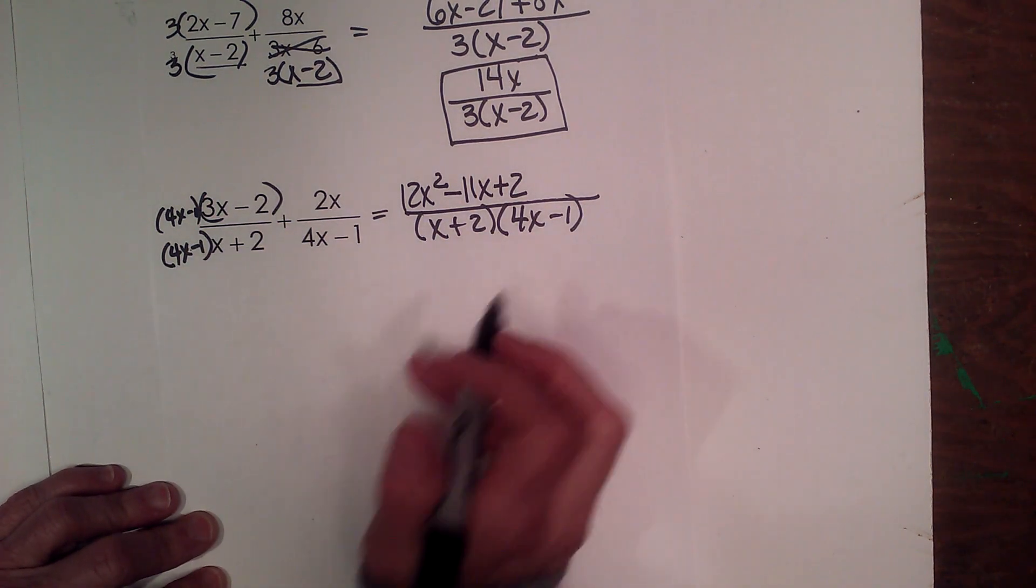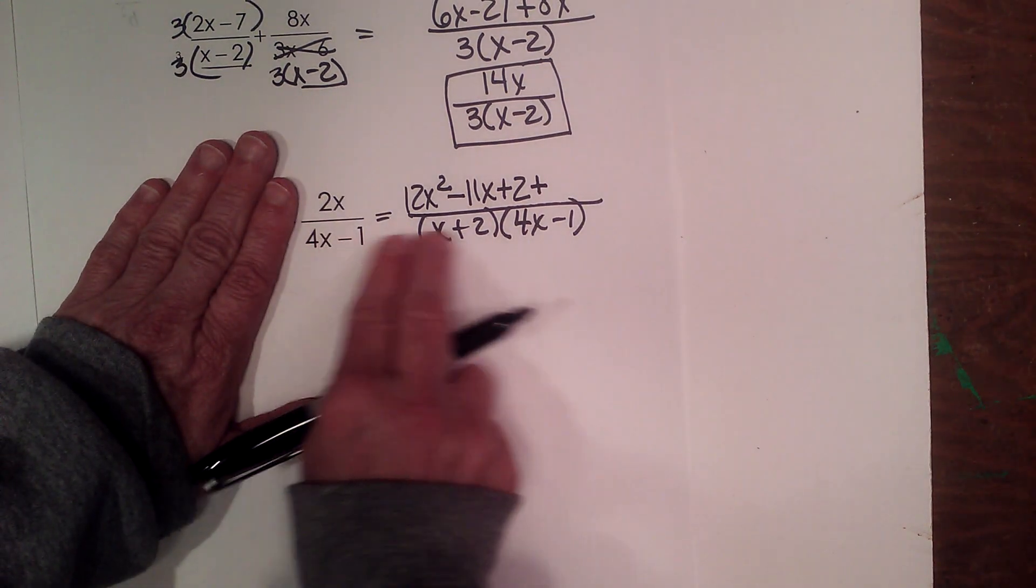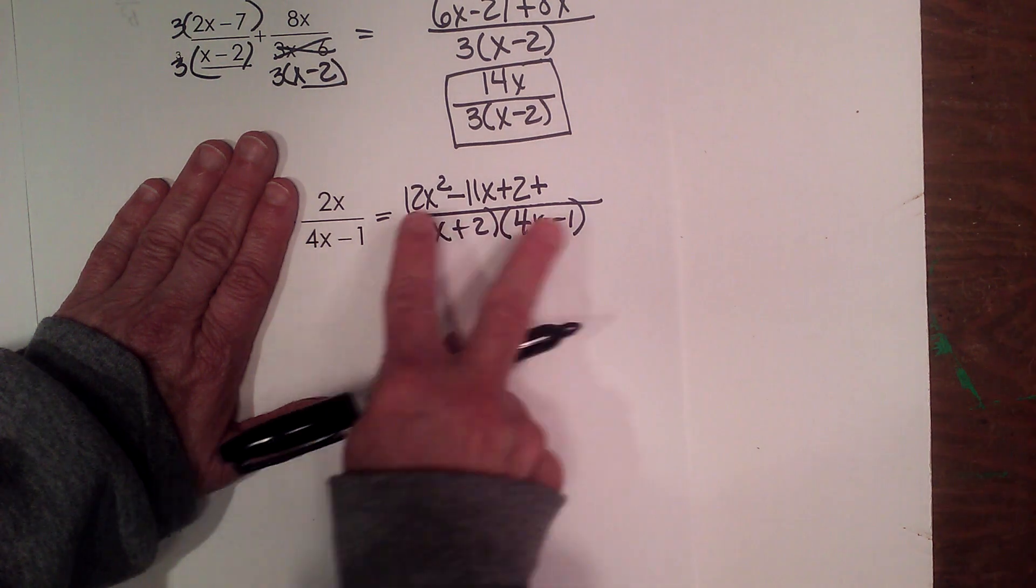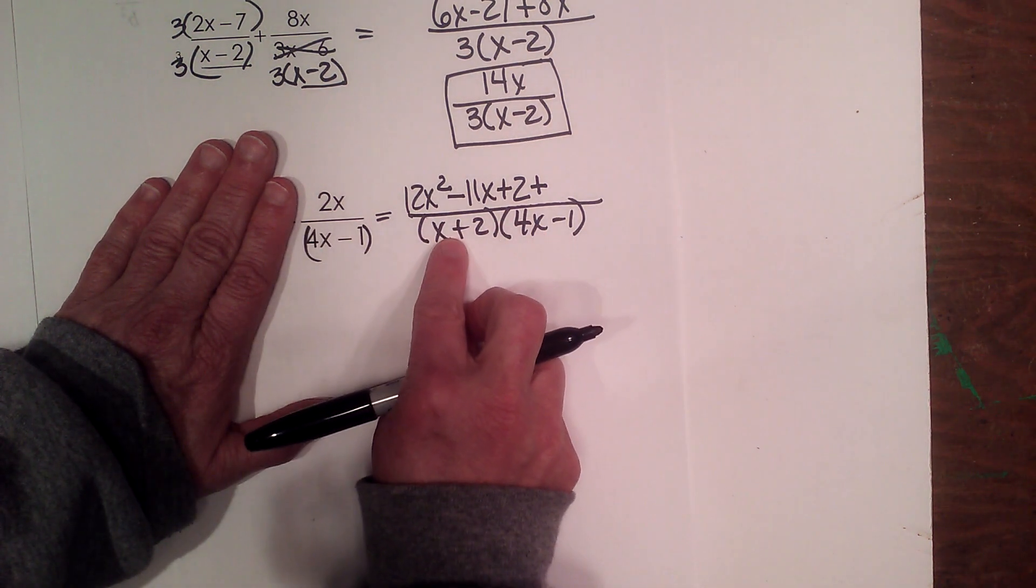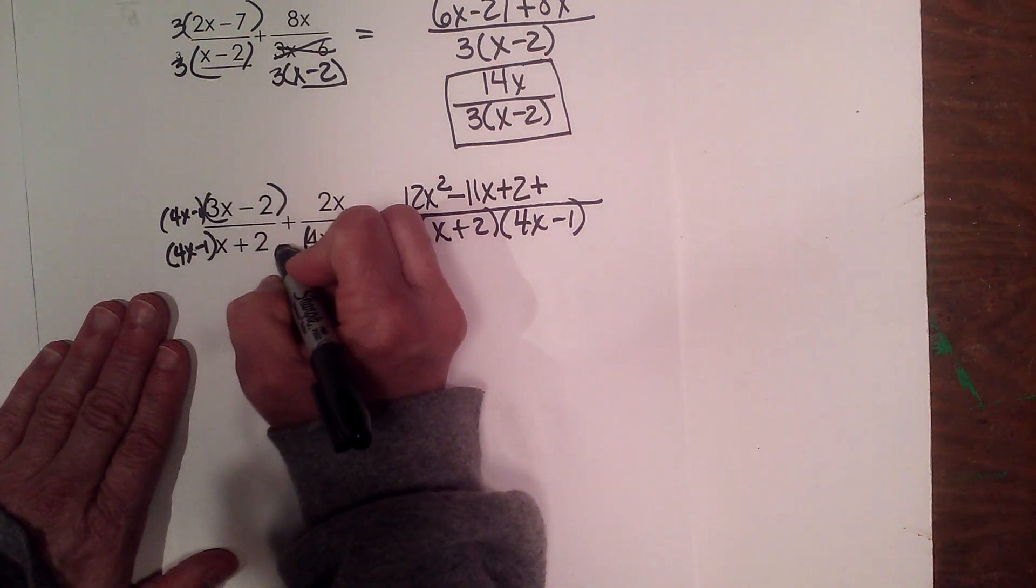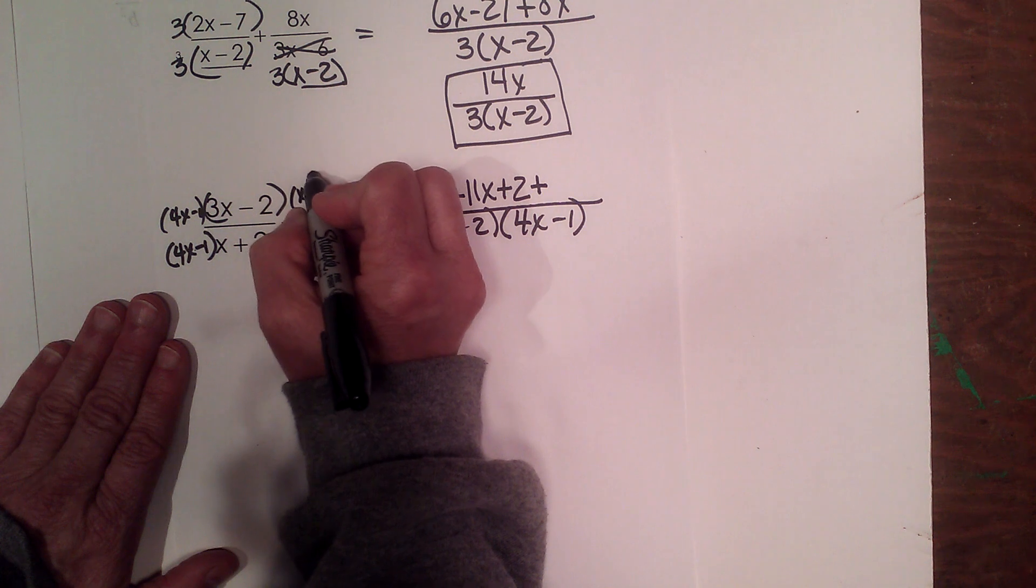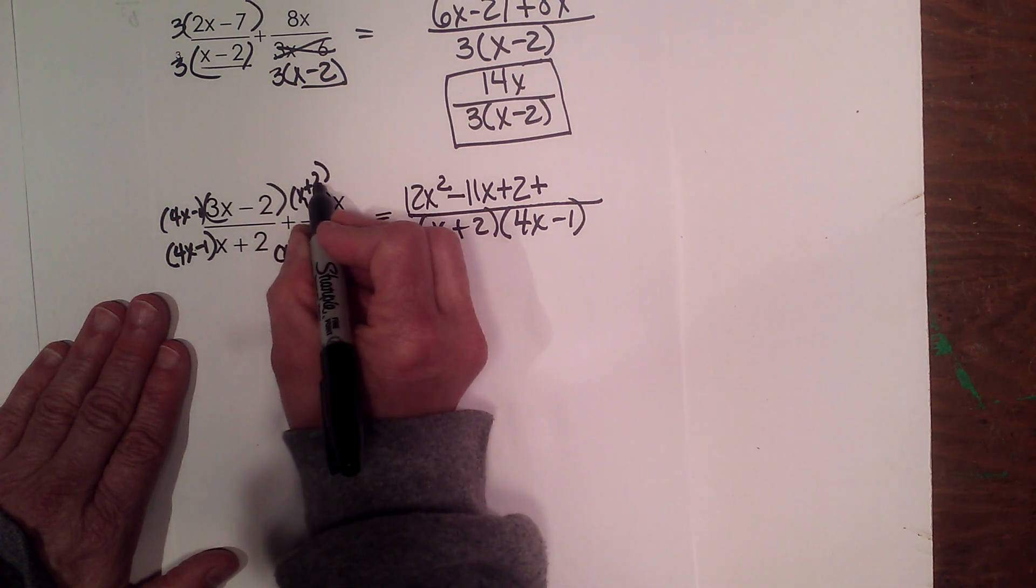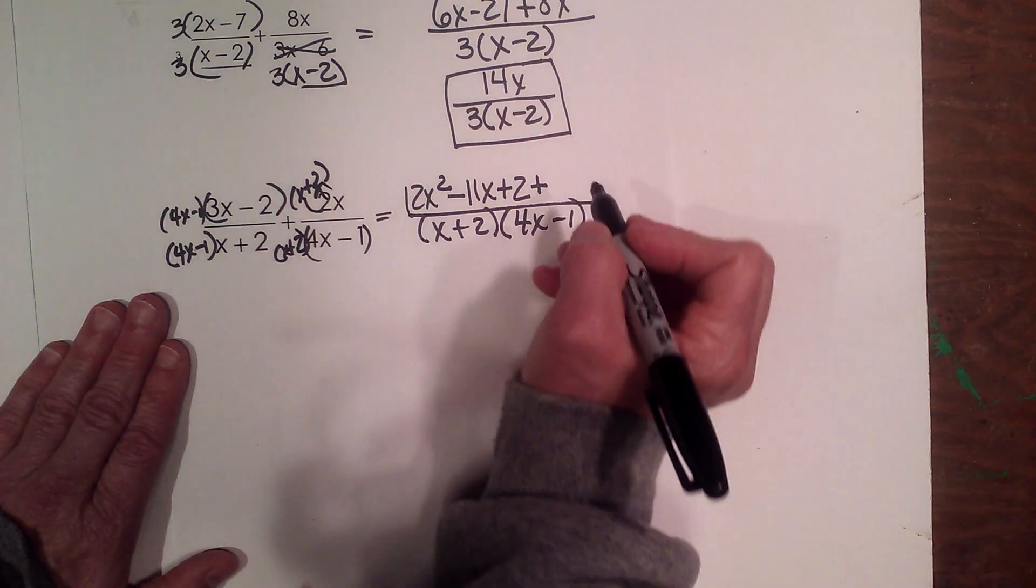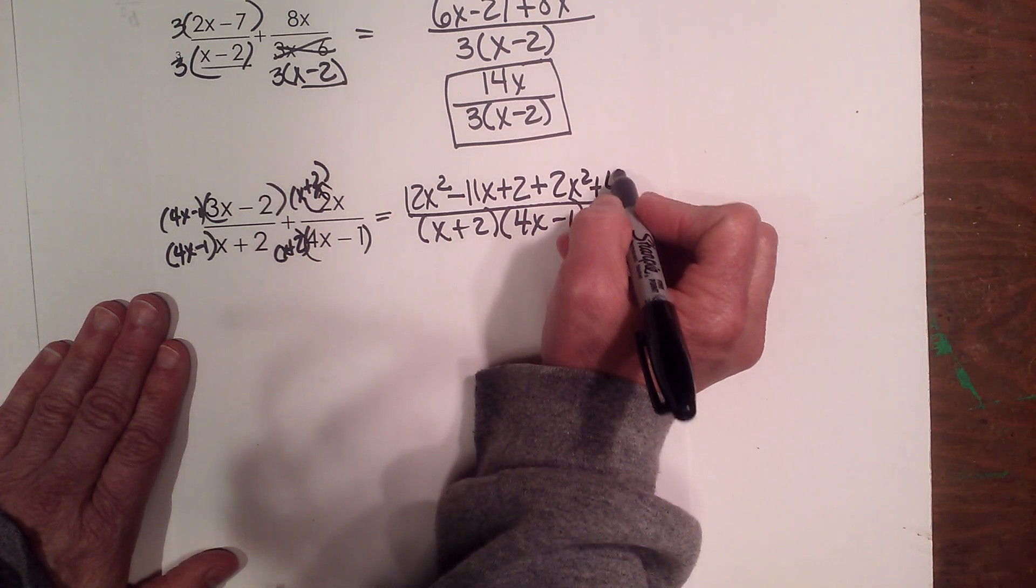Now let's go to the second term because I'm adding that. So let's look. What is my missing factor? Well, I have my 4x minus 1. I'm missing this x plus 2. So I need to multiply this expression by x plus 2 over x plus 2. So now I'm going to distribute this 2x into this binomial. So that gives me 2x squared plus 4x.